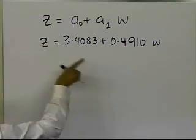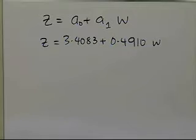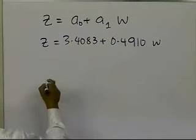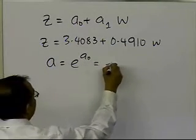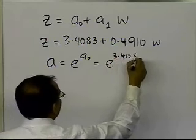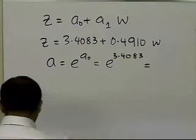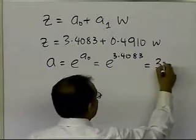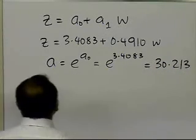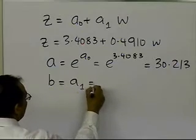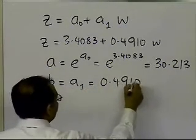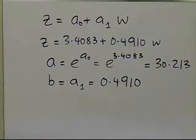That is the linear relationship between z and w, but that's not what we are interested in. We are interested in finding a and b of our power model. But a is given as e to the power a_0, and a_0 is 3.4083, so that number turns out to be 30.213. And b is nothing but a_1 itself, so we get 0.4910.